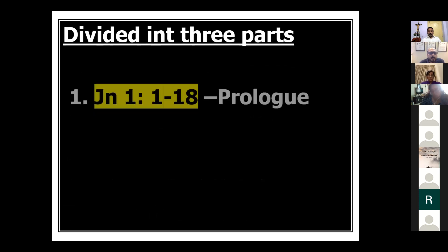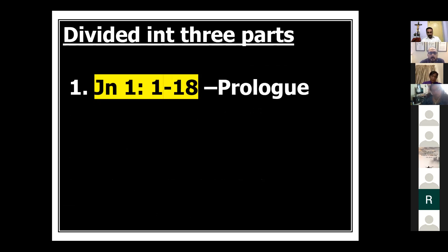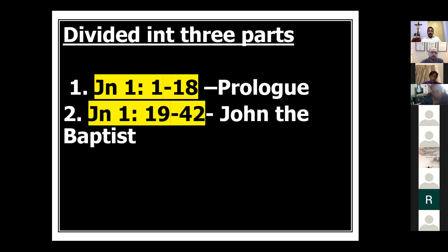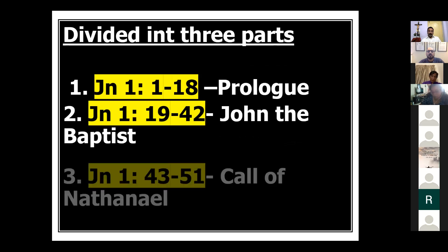Chapter one can be divided into three parts: verses 1 to 18 is the prologue; verses 19 to 42 is about John the Baptist; and verses 43 to 51 is the call of Nathaniel.